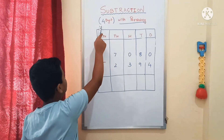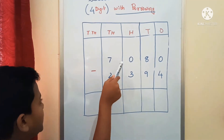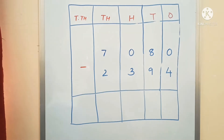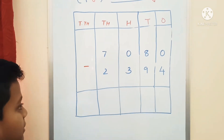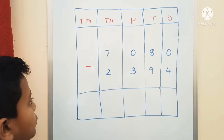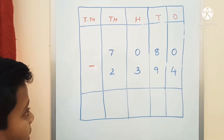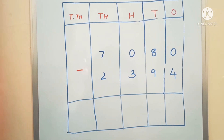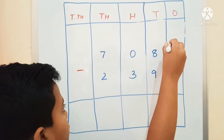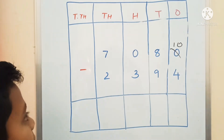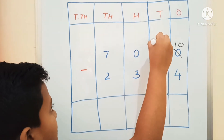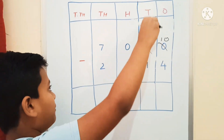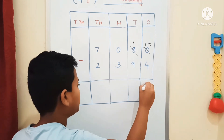Now let's do 4-digit subtraction. 7,080 minus 2,394. We will start with the 1's place. We cannot subtract 4 from 0. We go to the 10th place. In the 10th place, we have 8 that we can borrow. We will borrow 1 tenth. Now this 0 is 10, and after borrowing, this 8 is 7. Now we will start from the 1's place again: 10 minus 4 is equal to 6.